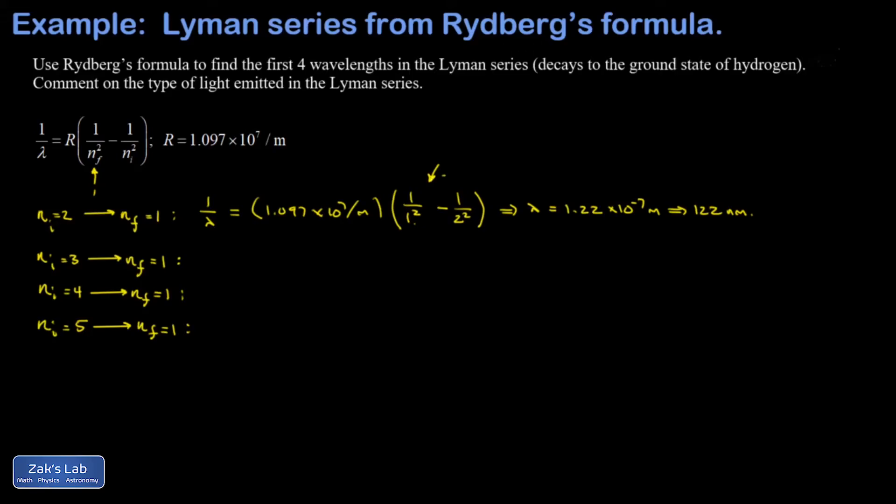Let's see what happens with the rest of them. For our n equals 3 to n equals 1 transition, again, my final state is the n equals 1 state. My initial was the n equals 3 state. So this gives me 1 minus 1 ninth, or 8 ninths in those parentheses. And again, I'll smash the numbers together all at once.